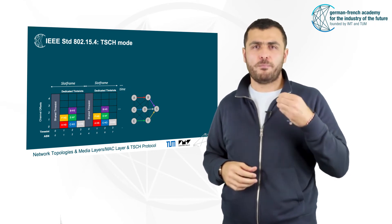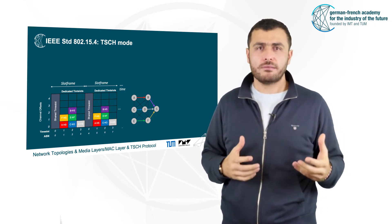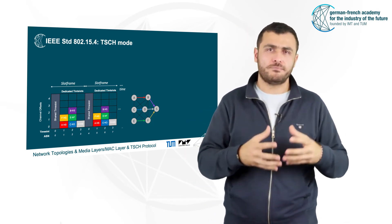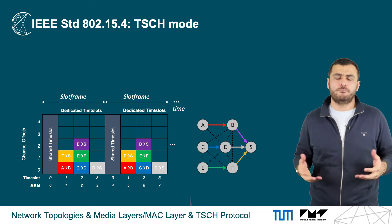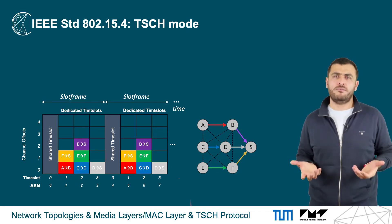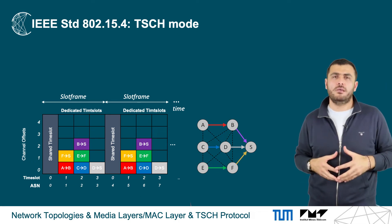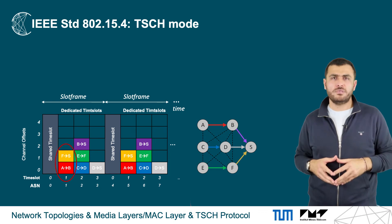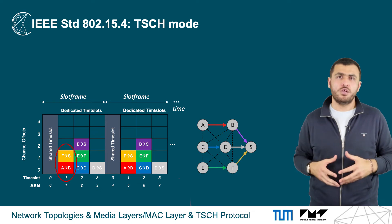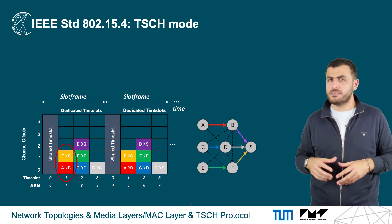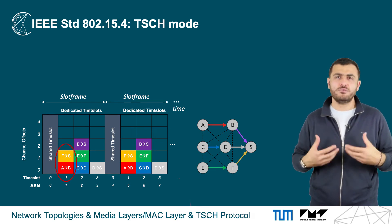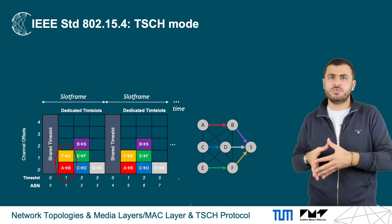Furthermore, for a given pair of nodes — transmitter and receiver — a specific time slot and channel offset is assigned, called a cell. In this schedule, where we represent time on the X axis and channel offset on the Y axis, we can see the allocated cells. For instance, in time slot 1, a node has an allocated cell to send a frame to node B on channel offset 0. At the same time slot, node F has a cell to send a frame to node S on channel offset 1.